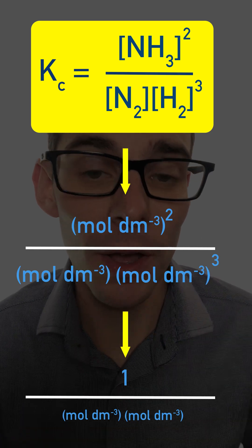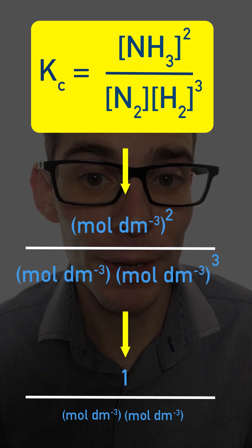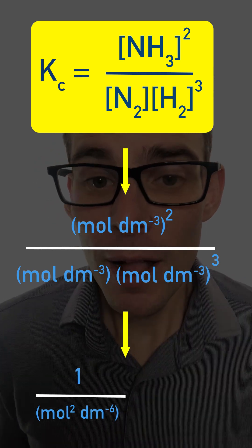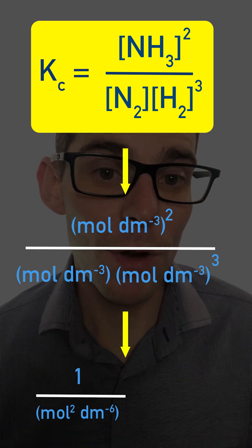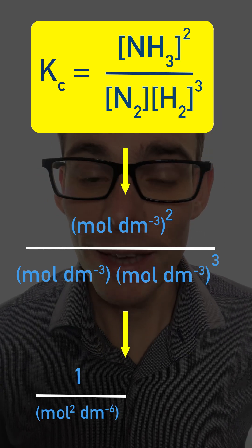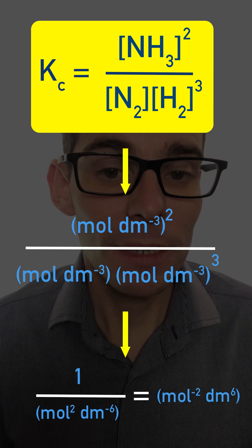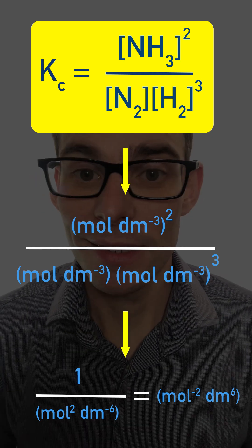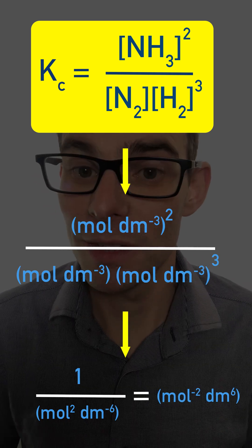Meaning one over mole per decimeter cubed times mole per decimeter cubed, so that's mole to the minus 2 decimeter to the minus 6. But one over means we've inverted them. So to get rid of that one divided by, we make the mole to the minus 2 decimeter to the positive 6, giving units of mole to the minus 2 decimeter to the 6, or decimeter to the 6 mole to the minus 2.